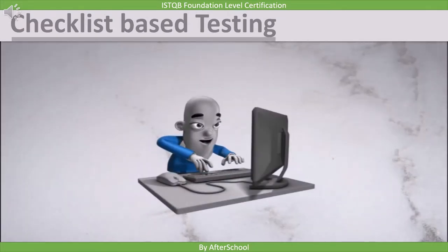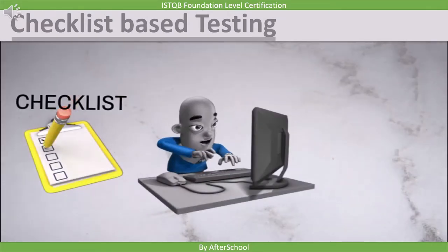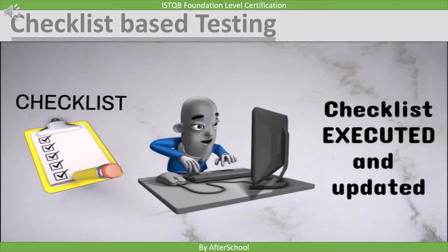The last type is checklist-based testing, where the checklist contains test conditions which need to be tested. The tester tests the feature based on the checklist provided while using their knowledge. If they feel more points can be added to the checklist, they add more points and test. This is how experience-based testing is combined with checklist-based testing.